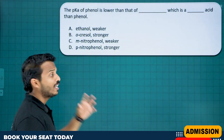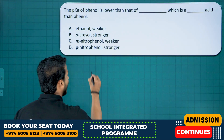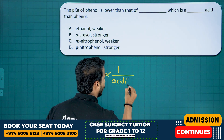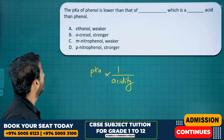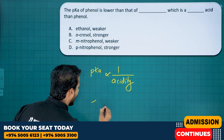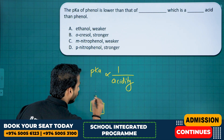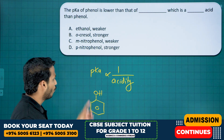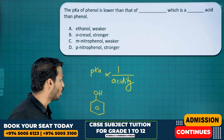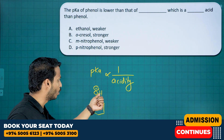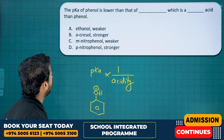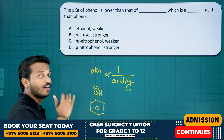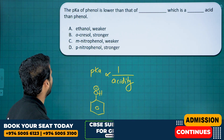Here we have the pKa. You know how pKa is related to acidity? pKa is inversely proportional to acidity. The pKa of phenol — phenol is lower than that of which compound? You know phenol is much more acidic because of the stable phenoxide ion after losing H+. So which one has lower acidity than phenol? That's what they're asking.